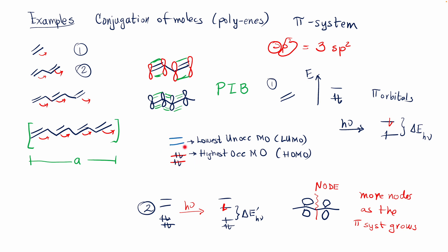Remember that you're going to have bonding and anti-bonding, and also the highest occupied molecular orbital — referred to as HOMO — and the lowest unoccupied molecular orbital — referred to as LUMO. The difference between those two levels is the energy that is going to be involved in those transitions.